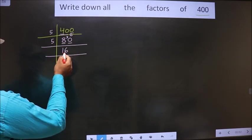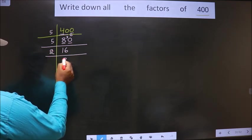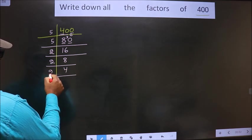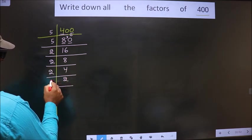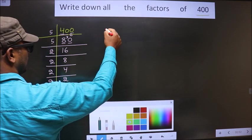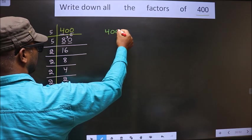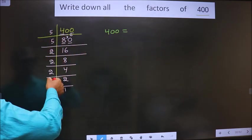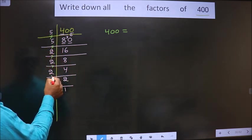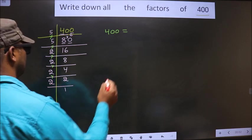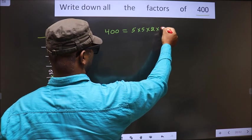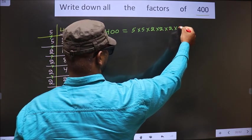Now we have 16. 16 is 2 eights; 8 is 2 fours; 4 is 2 twos; and 2 is a prime number, so we take 2 ones 2. So 400 equals the product of these numbers: 5 × 5 × 2 × 2 × 2 × 2 × 2.